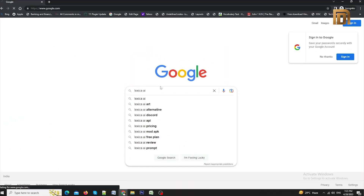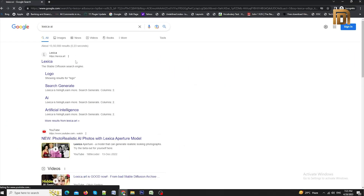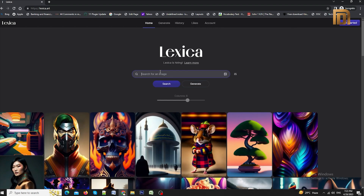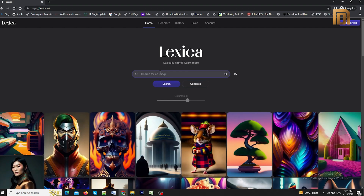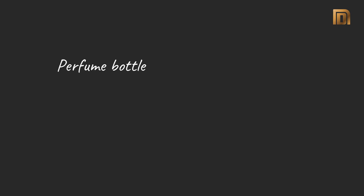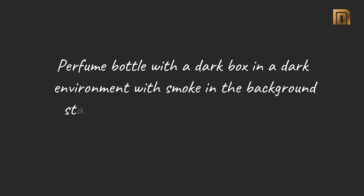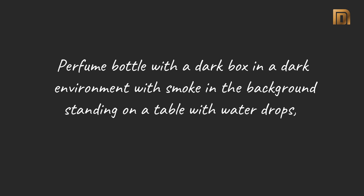Navigate to Lexica AI and in the search box, write anything you have in mind. For example: a perfume bottle with a dark box in a dark environment with smoke in the background, standing on a table with water drops and leaves in the background.